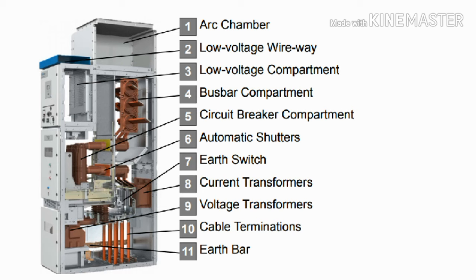From the top side of the switchgear panel the bus bar is connected to the circuit breaker, and then the circuit breaker's downside is connected to the downstream section.